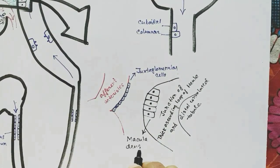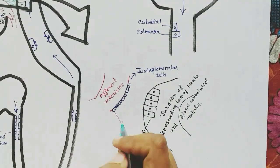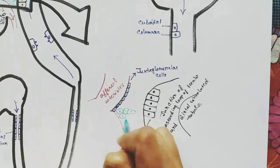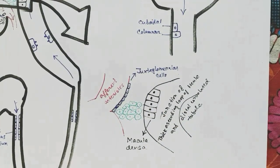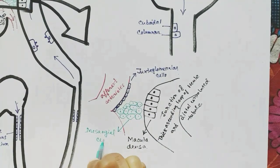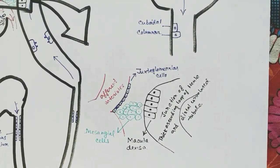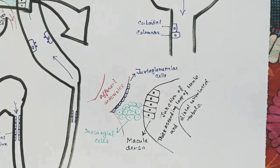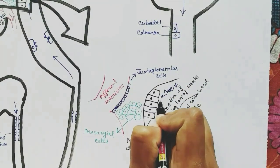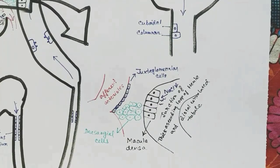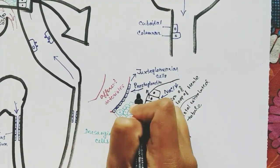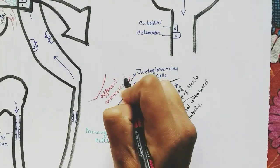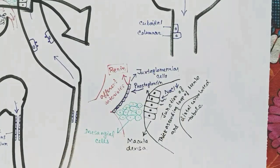At this region, macula densa cells are present — these are tall in shape and have a prominent nucleus. The macula densa cells can sense a decrease in sodium chloride in the lumen of the nephron. When sodium chloride levels drop, they release prostaglandin, which stimulates the juxtaglomerular cells to release renin.